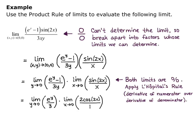Now I can just plug in my values because I'm not getting 0 over 0 anymore. So this is equivalent to e^0/3, times 2cos(0)/1. And this is 1/3 times 2, which gives me 2/3 as my overall limit.